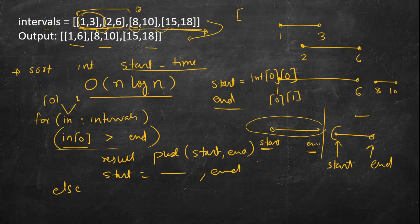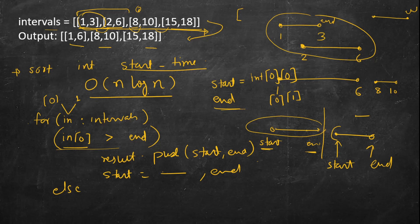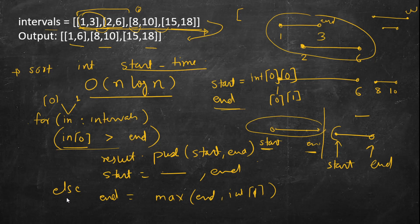In the else case, the current interval's start is less than or equal to the previous end, meaning there is overlap. The overlap can be partial — current interval starts before previous end — or the current interval can be completely enclosed. In either case, we update: end = max(end, i[1]). Finally, after the loop, we insert the last running start and end into the result, since we never get a chance to insert the last interval inside the loop.